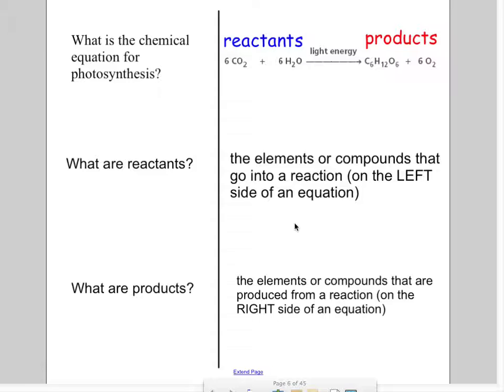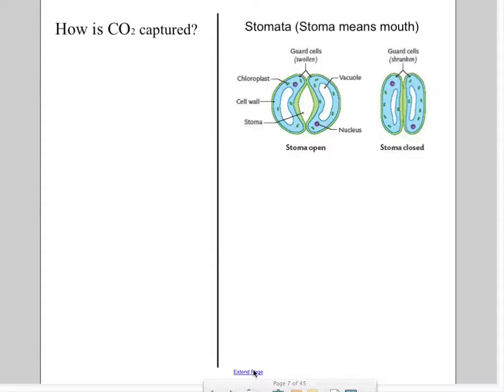It takes a lot in order to just make one sugar. Now, how is carbon dioxide captured? If you guessed stomata - stoma meaning mouth which looks like it opens and closes, which it does - you are correct.